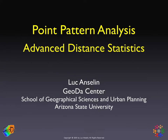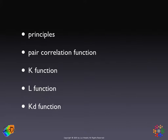So far, we've considered statistics that are based on the nearest neighbor distance. In this last part of the module on point pattern analysis, we'll look at some other distance-based statistics that don't constrain themselves to the nearest neighbor distance but take all distances into account. Specifically, we'll be looking at some so-called second-order statistics: the pair correlation function, the K and the L function, and the KD function which is based on an actual density.